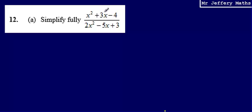Starting by factorising the expression on top, this is a quadratic. And so to factorise this quadratic, I need to spot two numbers which will multiply to make negative 4 but will sum to make 3. And those two numbers are going to be negative 1 and positive 4. So this expression at the top factorises to x minus 1, x plus 4.